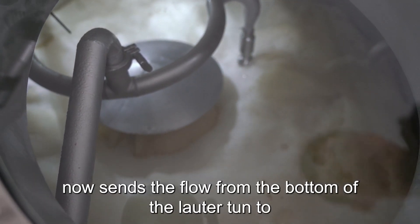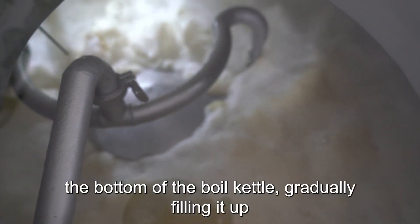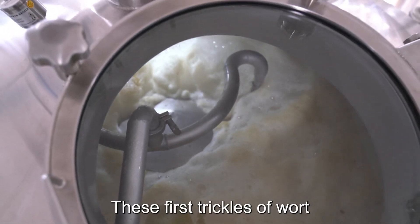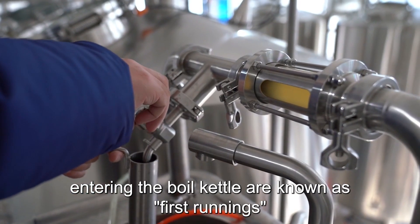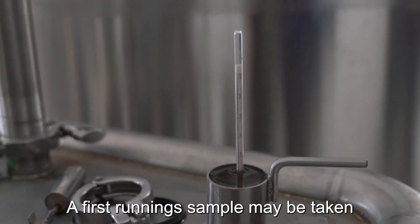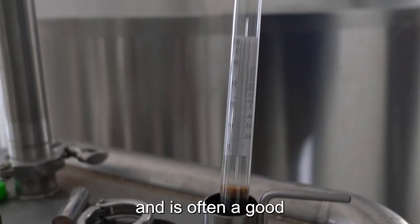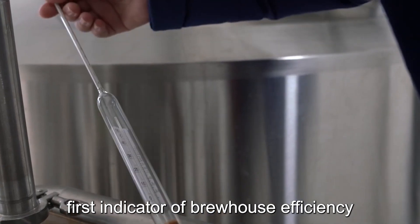The grant tank pump now sends the flow from the bottom of the mash tun to the bottom of the boil kettle, gradually filling it up. These first trickles of wort entering the boil kettle are known as first runnings. A first running sample may be taken and is often a good first indicator of brew house efficiency.